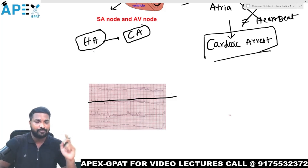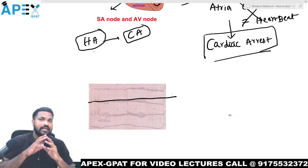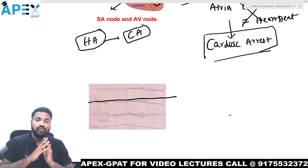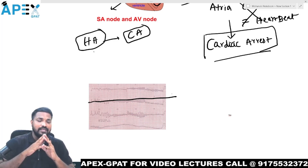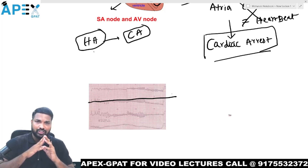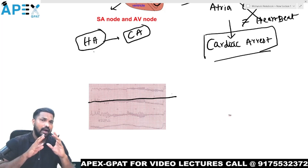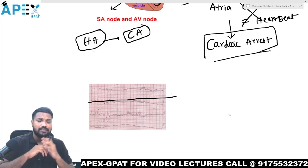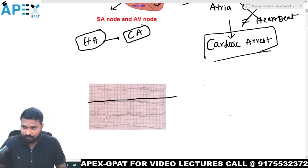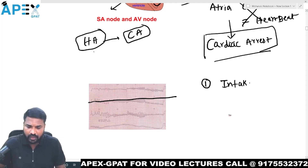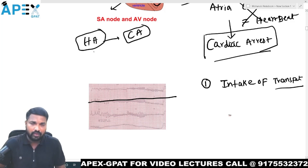Now, what are the reasons for heart attack? One major reason is atherosclerosis — that is, fat deposition in the arteries. Let us look at the reasons for heart attack. One major reason is intake of trans fat.